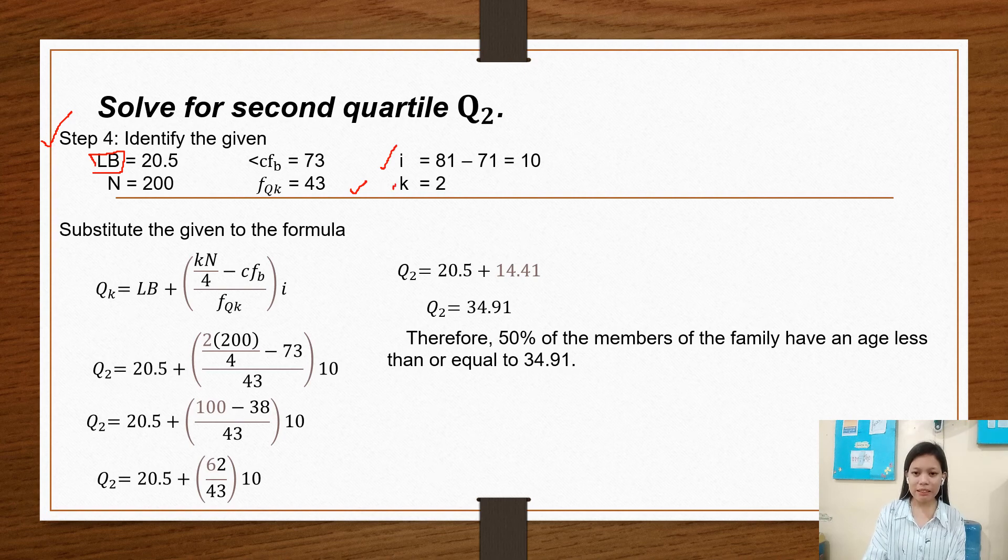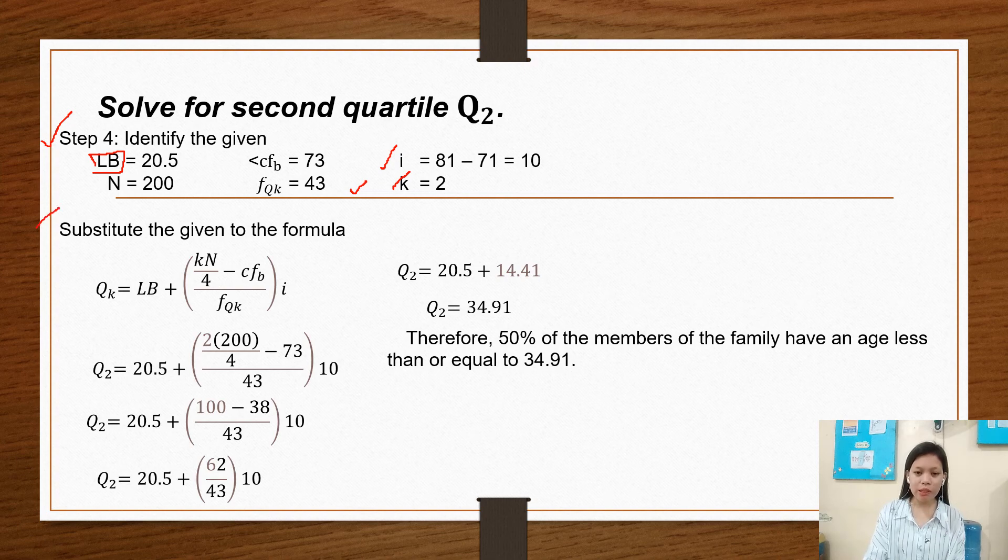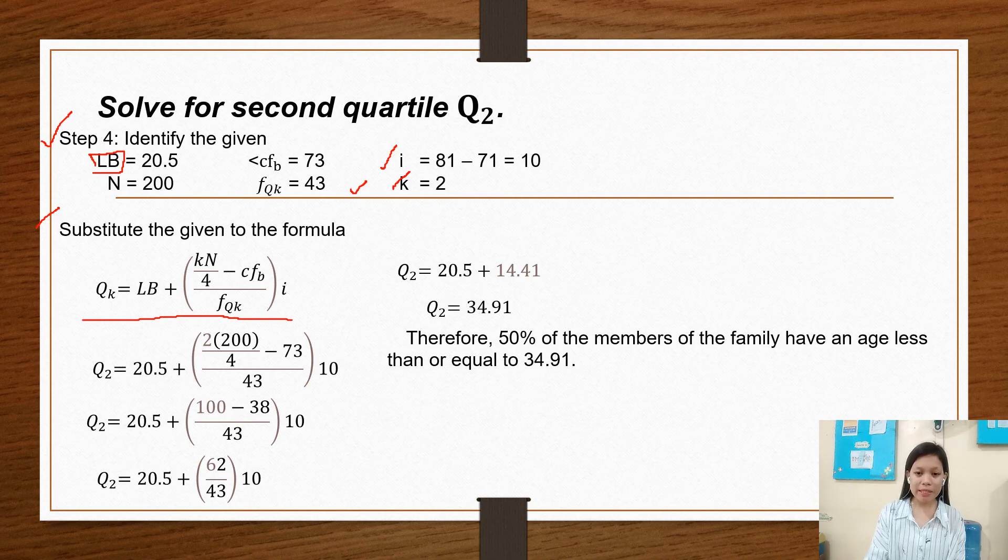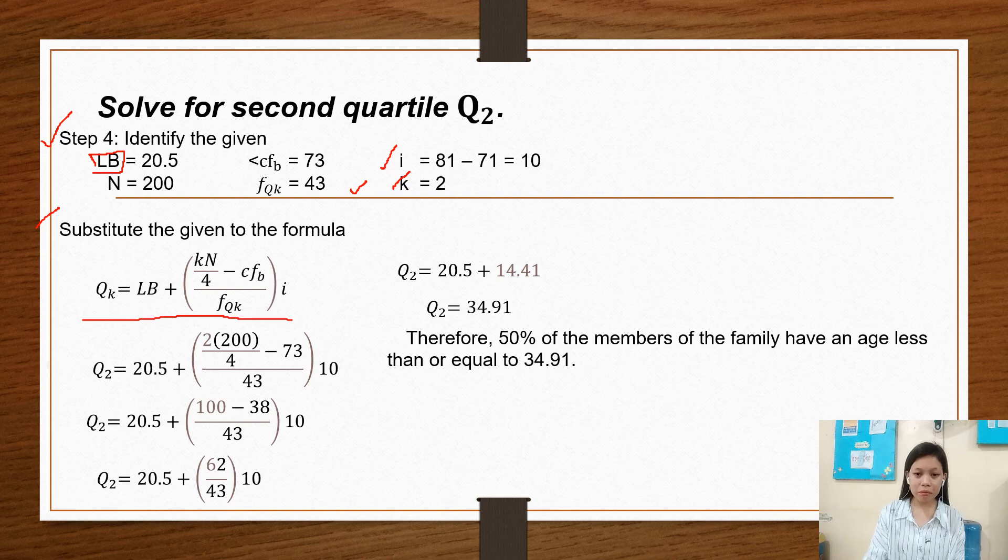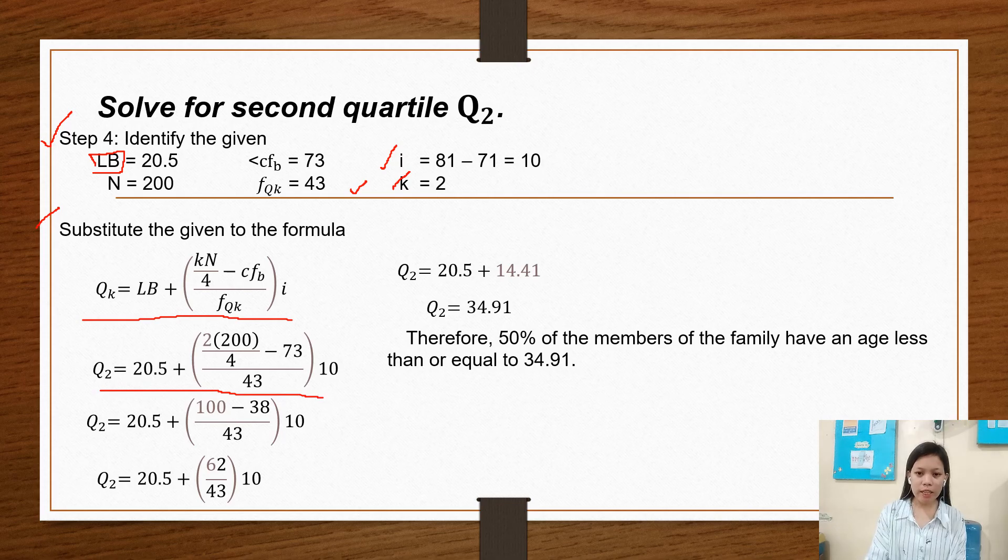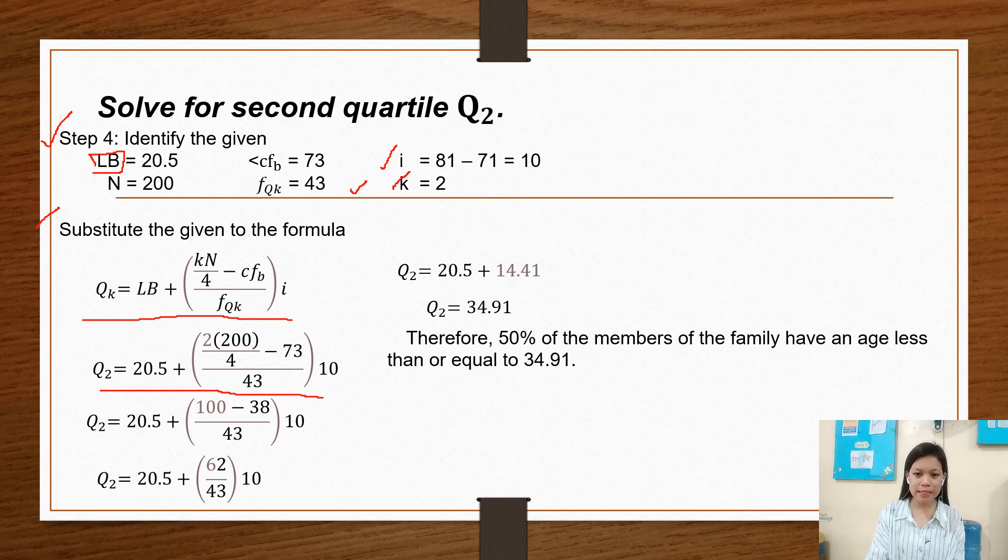And now we have to substitute the given to the formula. So our formula is Q sub K equals lower boundary plus K times N over 4 minus CFB over frequency times interval. So we have here the substitution: Q sub 2 equals 20.5 plus 2 times 200 over 4 minus 73 over 43 times 10.